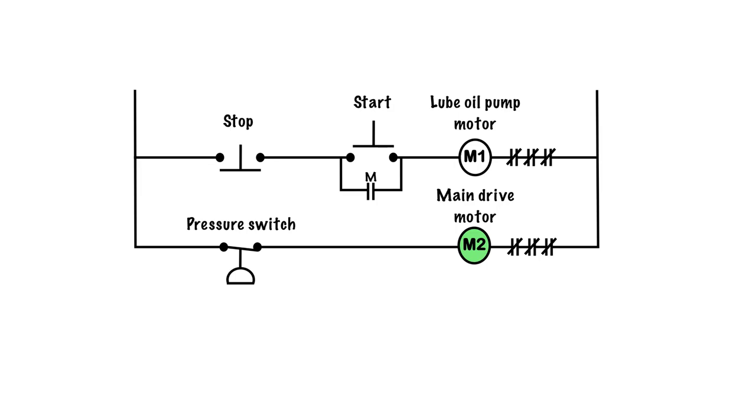Now the pressure switch is open and the circuit is de-energized totally. It's good to keep in mind that whatever happens to M1 is controlling the whole thing. If the lube oil pump motor has stopped, the main drive motor cannot run because it does not have pressure built up in it to keep it safe and cool.